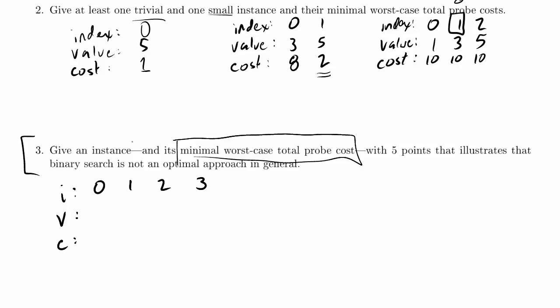Let me sketch out what the tree would look like for binary search. On the left side it'll certainly go here. On the right, it might go like this, or it could instead go like this — it could start here. On the left it's certainly going to go to that node, but on the right it could go to a different node next. The mirrors of all that are also possible binary search patterns. Binary search is pretty vague at this point.